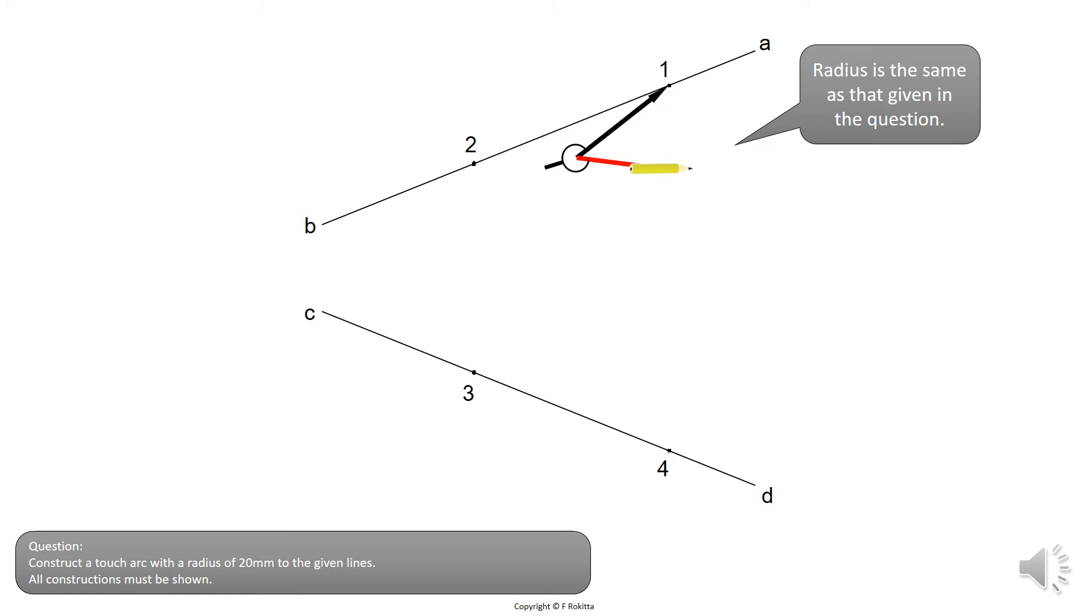The next step you will take your compass and stretch it to the required distance of the touch arc in the question, and that would be 20 mm. Draw a construction arc above number 1, above number 2, above number 3, and above number 4. Please remember, they are all perfectly 20 mm in radius.